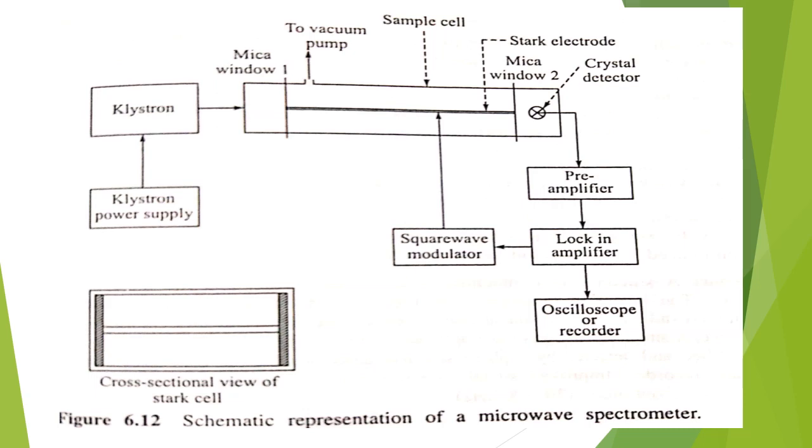This is the schematic diagram of the microwave spectrometer. On the left side, we have a klystron power supply and klystron source. This source gives out radiation. This radiation is guided by the waveguide.